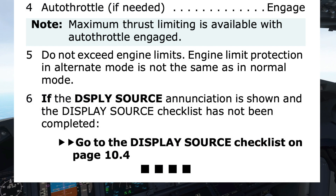Step 5 warns not to exceed engine limits and states that engine limit protection in alternate mode is not the same as in normal mode. Step 6 is conditional, using bold text to draw the pilot's attention to it being an if-conditional step: if the display source enunciation is shown and the display source checklist has not been completed, then we go to the display source checklist.